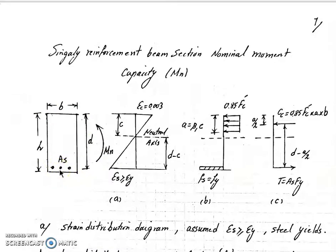This is the strain distribution diagram. Epsilon c is for the concrete and epsilon s is for the steel. We assume that the steel yields, so that's why we assume that epsilon s is equal to or greater than epsilon y. Epsilon y is the yield strain on the steel rebar.